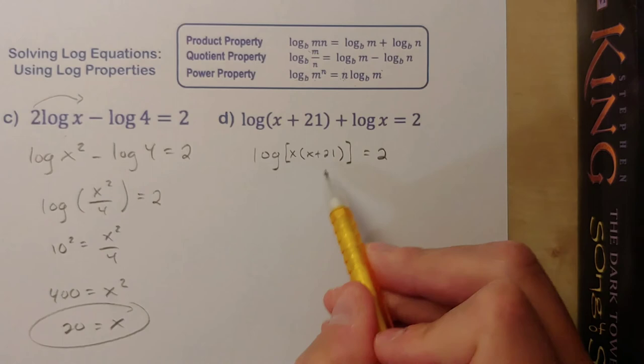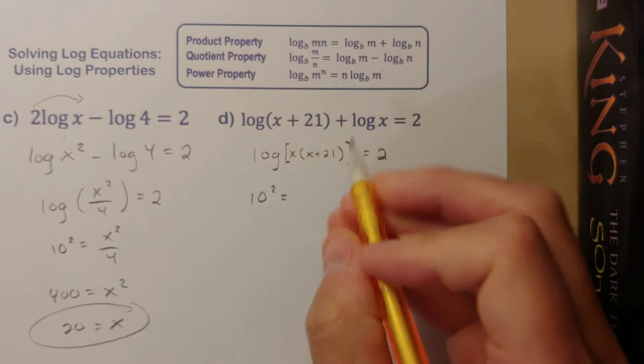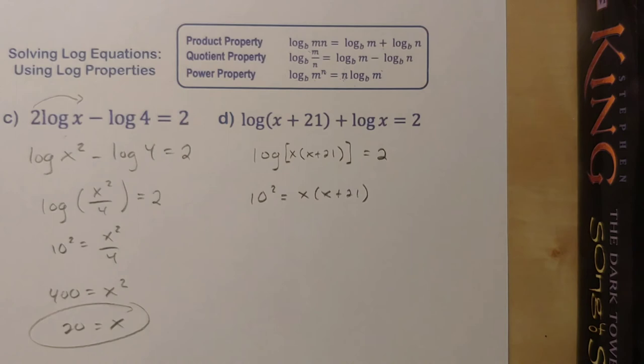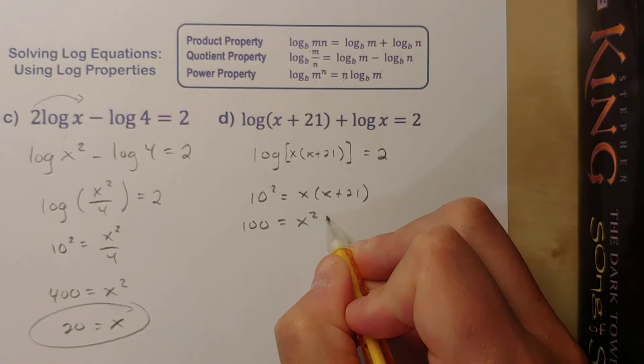Is equal to x times (x+21). Cleaning this up, we get 100 equals x squared plus 21x. Aha, here we get an x squared, so now we're thinking back to our work with quadratics. It looks like I'm going to have to solve a quadratic equation here.